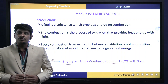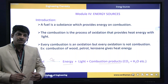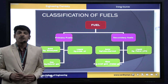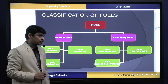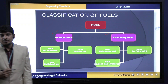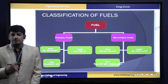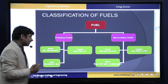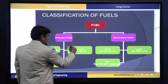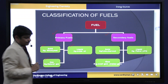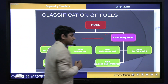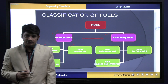Not all oxidation reactions are combustion, but all combustion reactions can be considered as oxidation reactions. Coming to the classification of fuels: based on origin, fuels are classified into two types — primary fuels and secondary fuels. Primary fuels originate from natural sources and are classified into three types based on physical state: solid, liquid, and gaseous fuels. Secondary fuels are synthesized using primary fuels and are also divided into solid, liquid, and gaseous fuels.